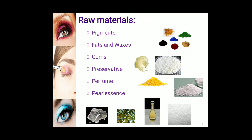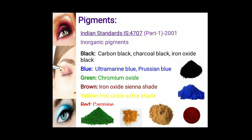There are different raw materials required to manufacture eye cosmetics. These raw materials are pigments, fats and waxes, gums, preservatives, perfumes, and some pearlescent ingredients. We will see each one by one, starting with pigments.